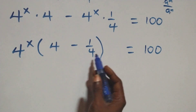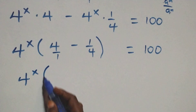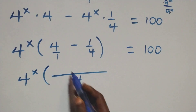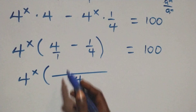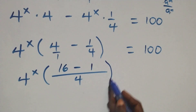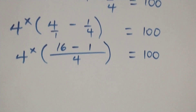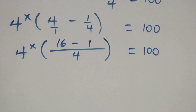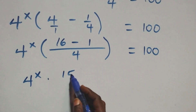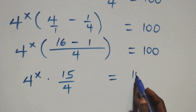Then here we bring this fraction to a common denominator — this is 4 over 1. At this we have 4 raised to power x times 16 minus 1, that's 15, then over 4 equals to 100.